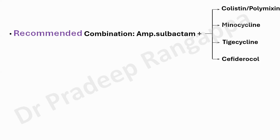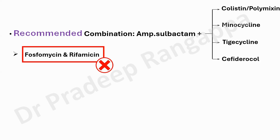The combination options are: sulbactam with colistin or polymyxin, sulbactam with minocycline, sulbactam with tigecycline, or sulbactam with cefiderocol — though cefiderocol is also unavailable in India, though it is said to be coming soon. IDSA 2024 also suggests that fosfomycin combinations and rifampicin combinations should not be used, whereas earlier we would consider these.